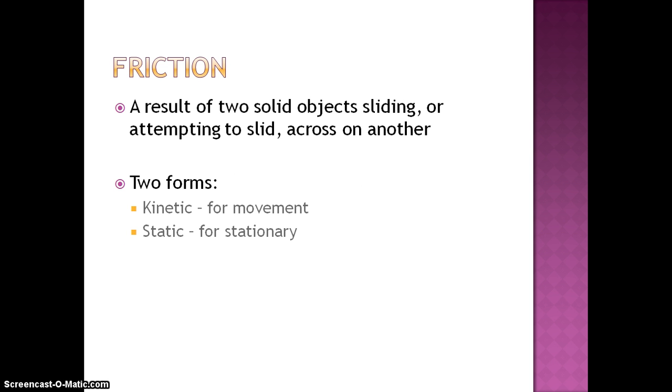Our next force, speaking of, is friction. Friction is the result of two solid objects, just like normal, but they're either sliding across one another, or they're attempting to slide across one another. There are two types. There's kinetic for objects that are in motion, and there's static for objects that are stationary.